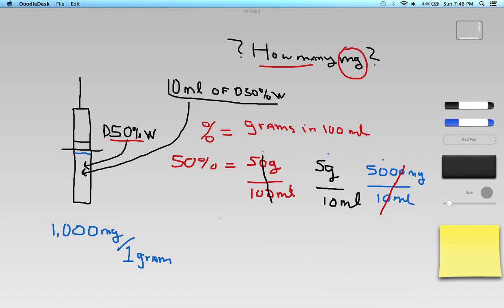Now at this point, I can do a couple of things. I can go through a dimensional analysis where I write what I know on this side and what I want to know on this side. What I do know for a fact now is that 50% dextrose is equivalent to 500 milligrams per one milliliter.